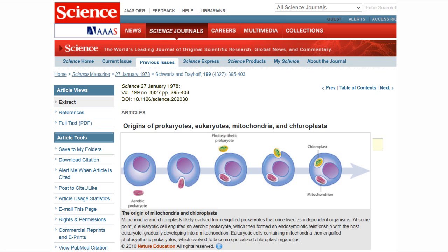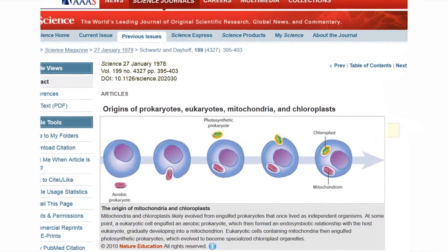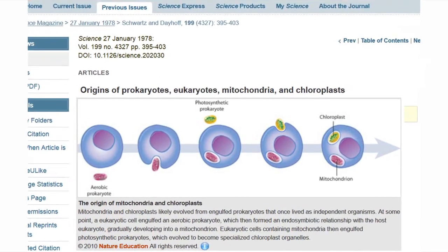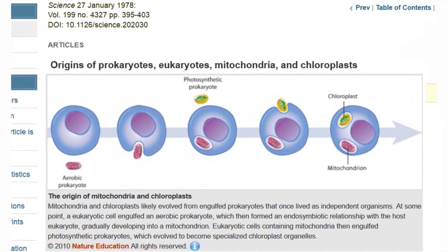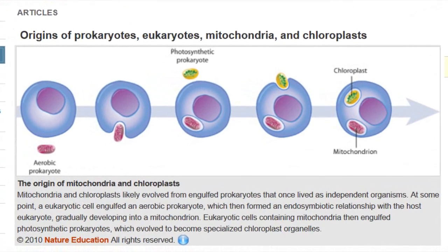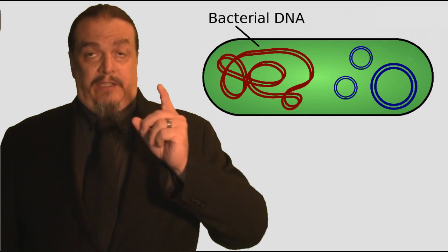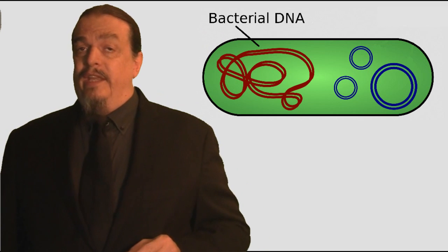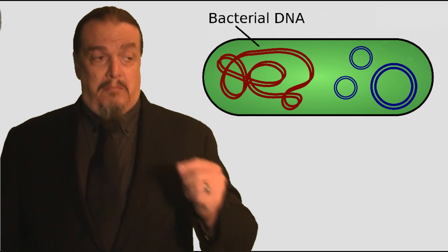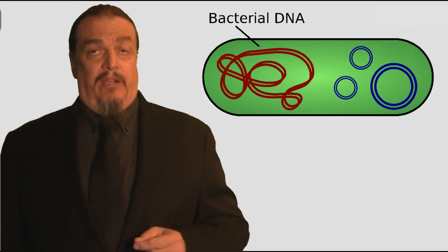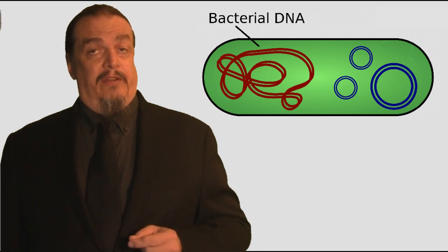Her work was vindicated in 1978 by Robert Schwartz and Margaret Dayhoff. They discovered that chloroplasts and mitochondria both had different DNA than was found in the nucleus of the cell they were a part of, and the type of DNA they had matched the profile of bacteria.